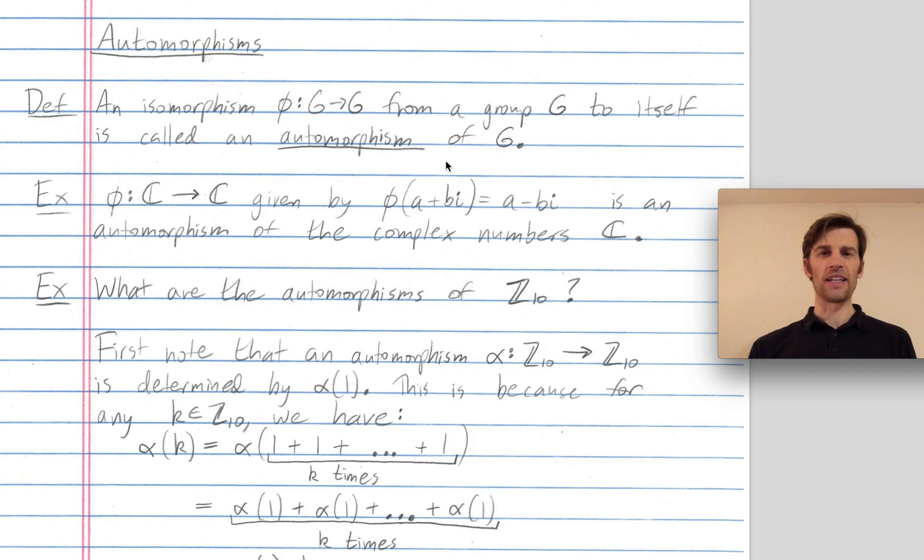So what is an automorphism? Remember an automorphism is just an isomorphism phi that happens to go from a group G to itself. What distinguishes an automorphism from an isomorphism is that in an isomorphism this could be G mapping to H, but in an automorphism this has to be G mapping to G.